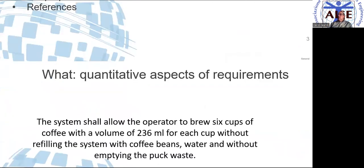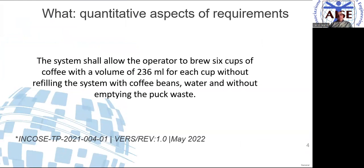I think many of us can easily recognize this requirement: 'The system shall allow the operator to brew six cups of coffee with a volume of 236 milliliters for each cup, without refilling the system with coffee beans and water, and without emptying the waste pack.' What are the quantitative aspects in this requirement, taken from the verification and validation guide?